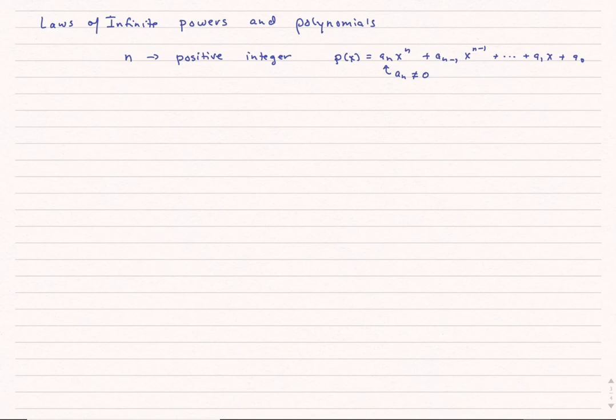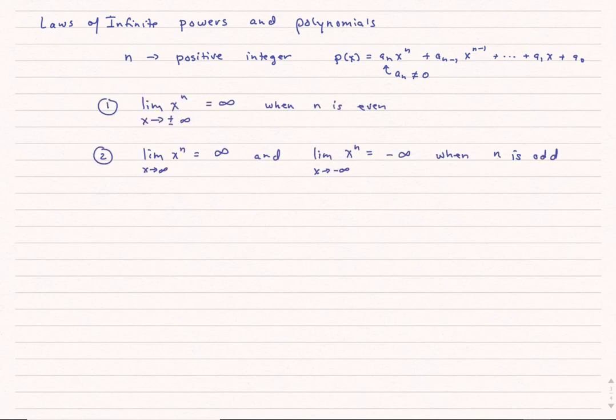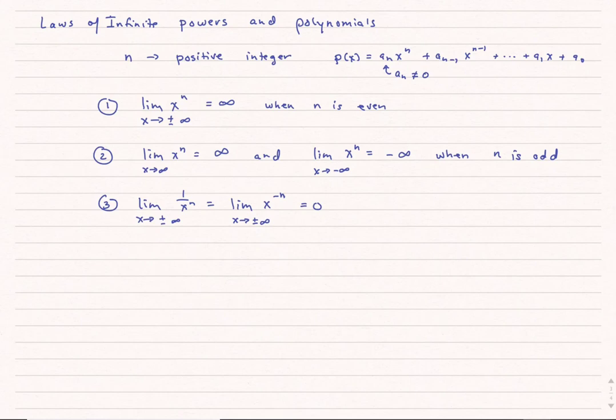I'll start with the assumption that n is a positive integer and p of x is a polynomial equal to a sub n times x to the n plus a sub n minus 1 times x to the n minus 1, all the way down to a1x plus a0, where a sub n is non-zero. The limit of x to the n as x goes to both positive and negative infinity equals infinity if n is even. If n is odd, it goes to positive infinity when x goes to positive infinity, and to negative infinity when x goes to negative infinity. The limit of 1 over x to the n as x goes to either positive or negative infinity equals 0.